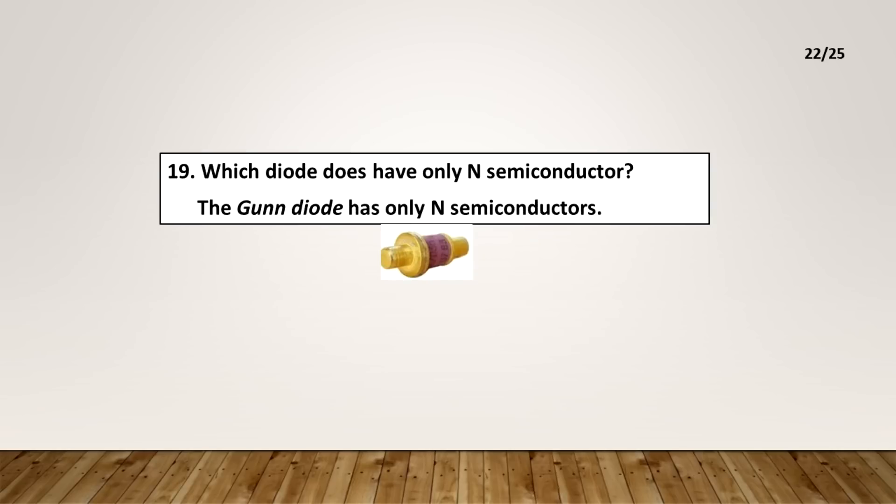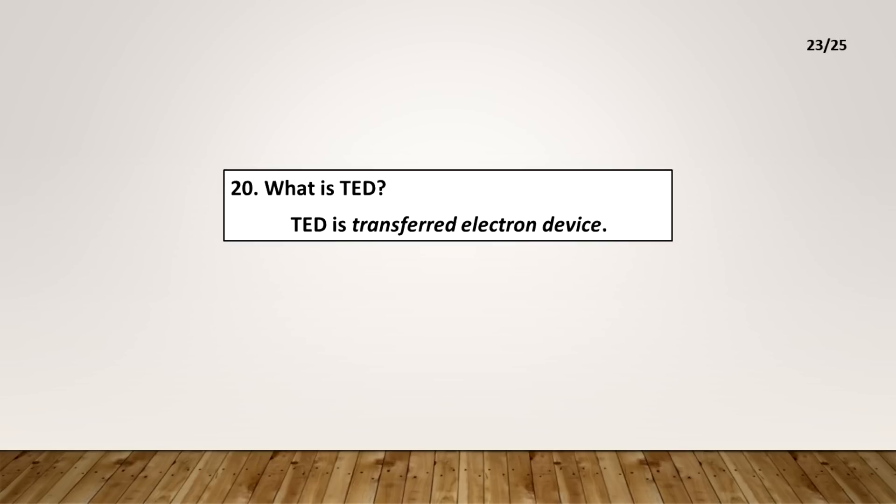Which diode does have only N semiconductor? The Gunn diode has only N semiconductors. What is TED? TED is transferred electron device.